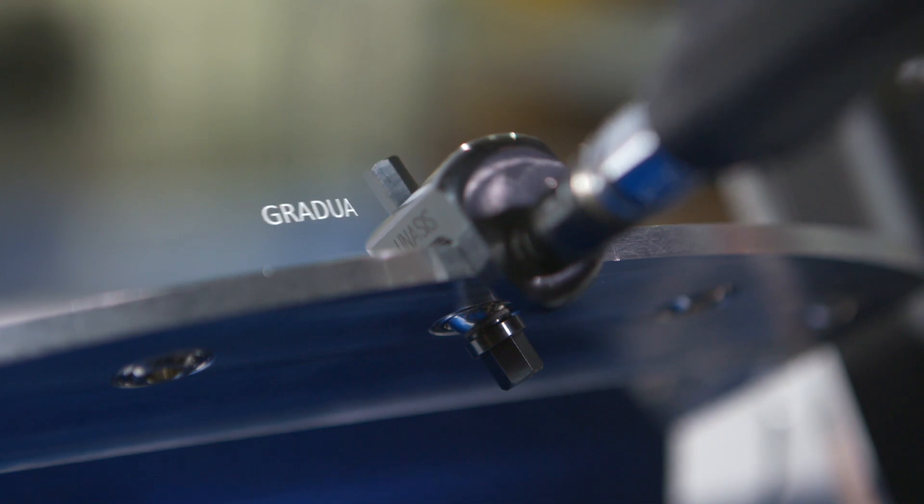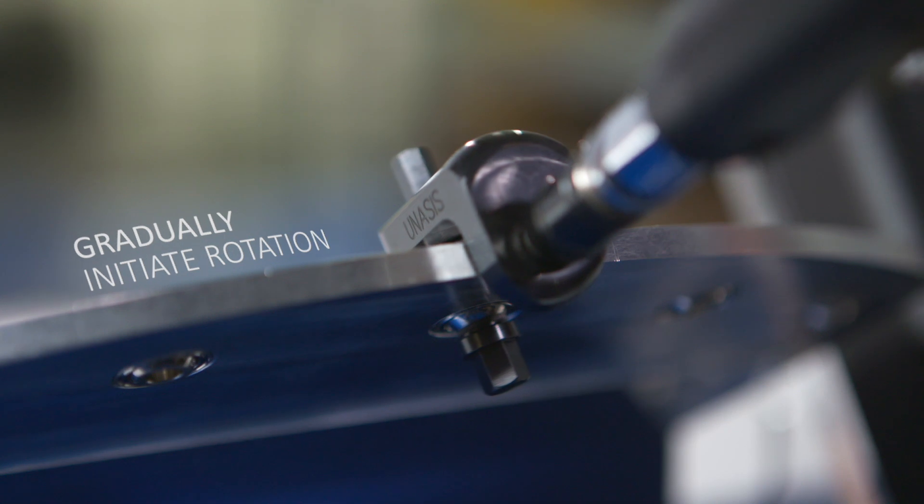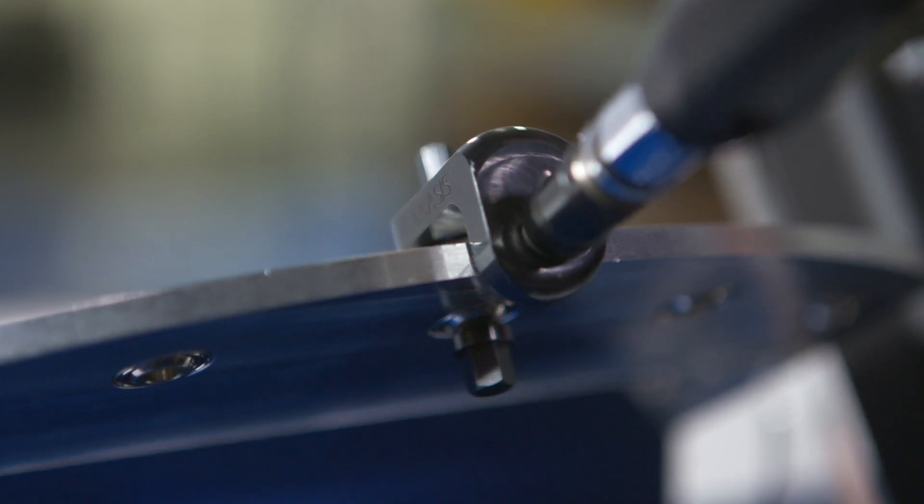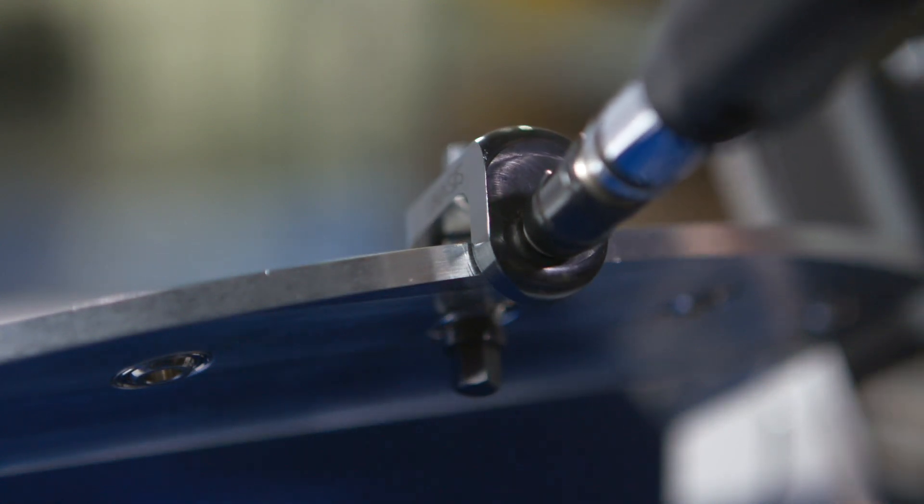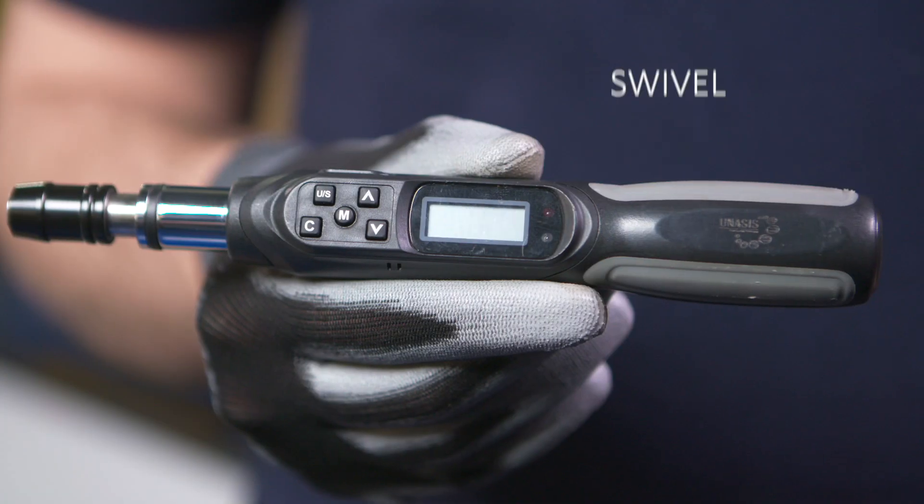Just like before, gradually initiate rotation on the tool, as slowly as possible. Again, if the tool contacts the housing, the reading is invalid, so be careful. This is your swivel torque value.